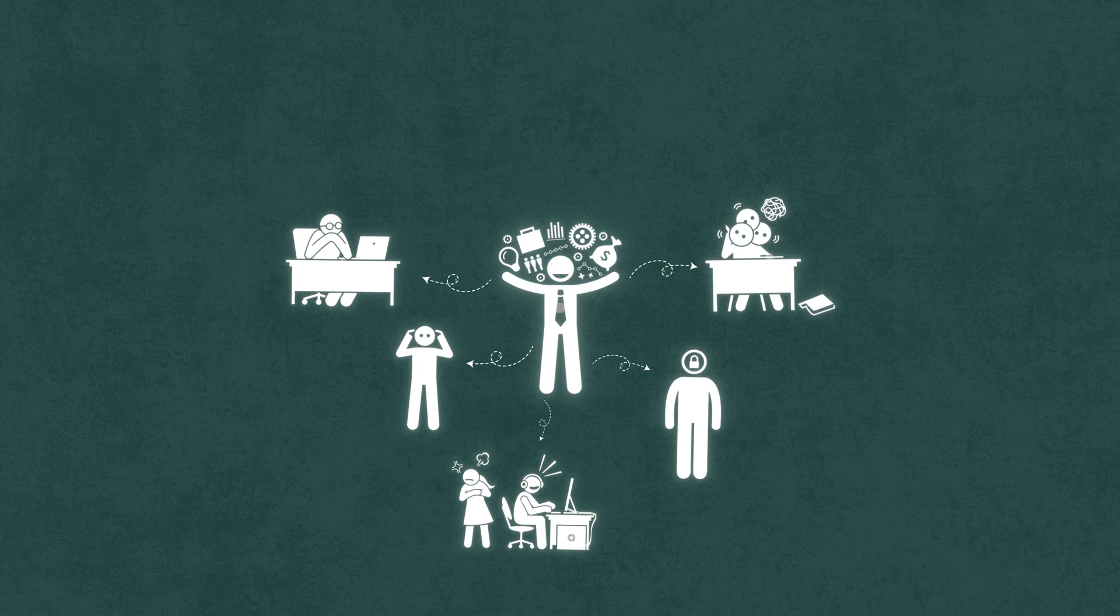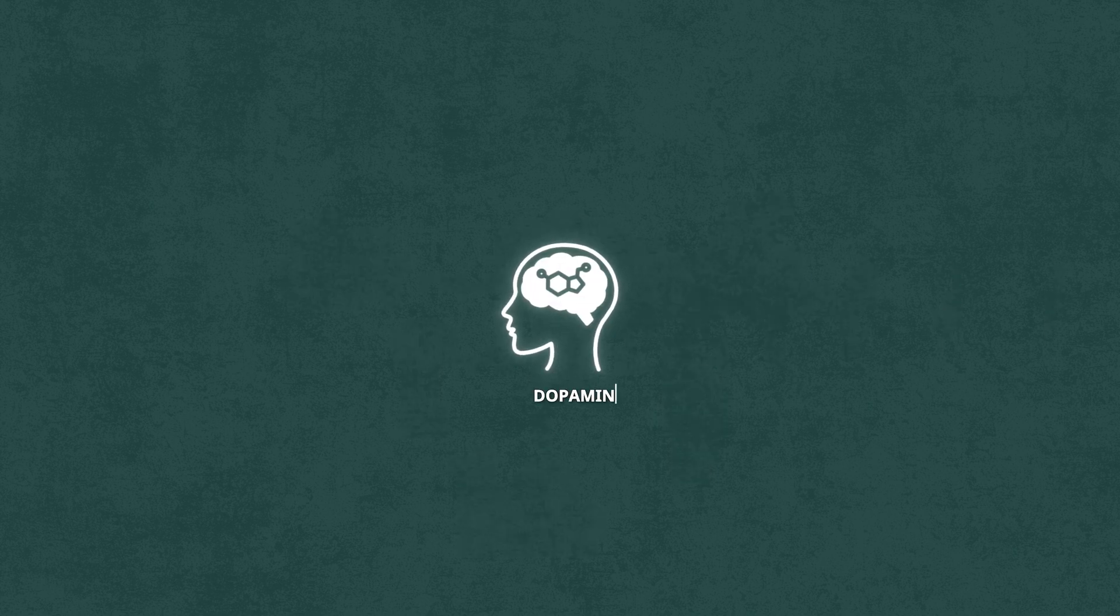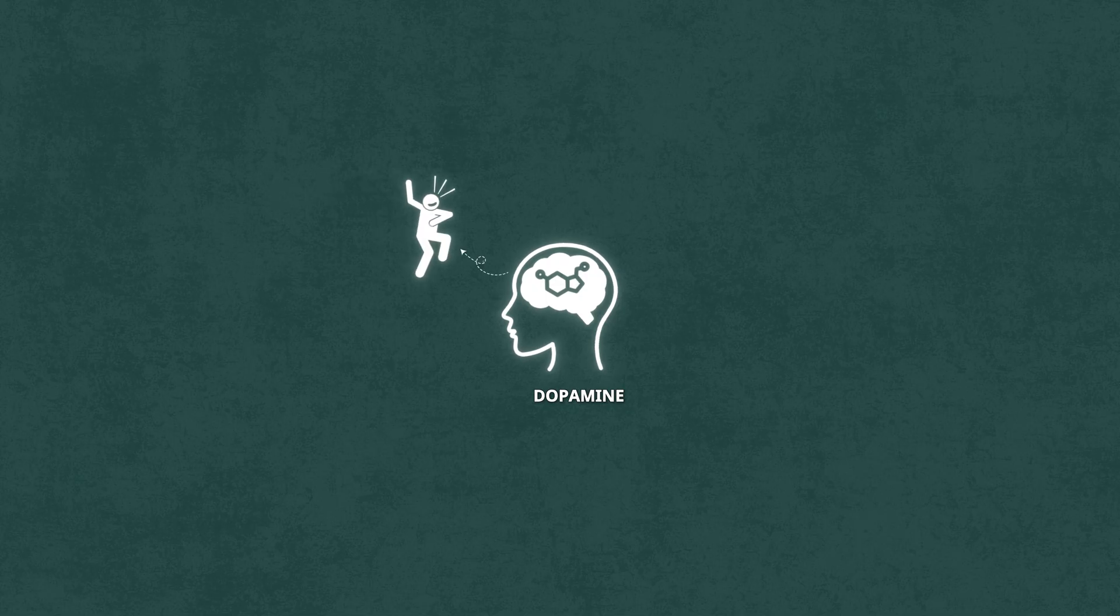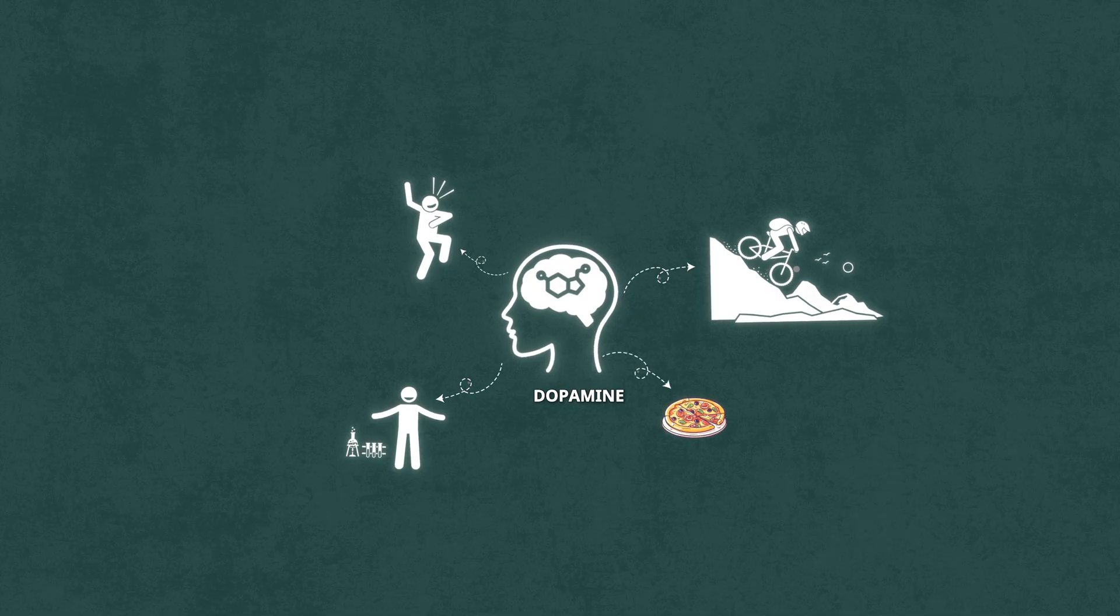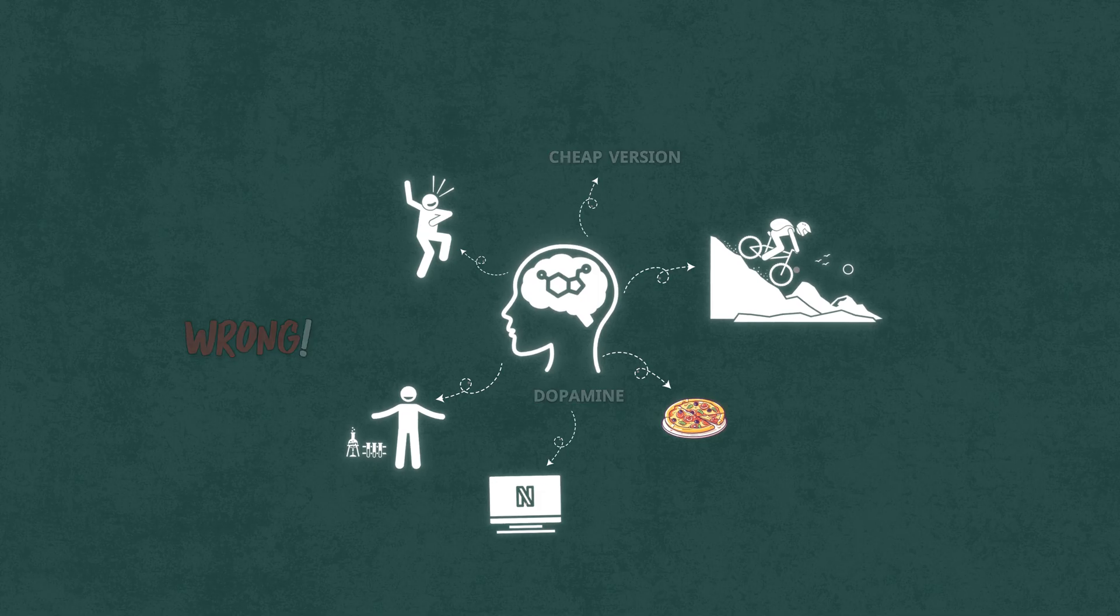Now we move to the second system, dopamine. And let's clear this up right now. Dopamine is not about pleasure. It's about pursuit. See, most people think dopamine is that happy chemical you get when you eat pizza or binge Netflix. Wrong. That's just the cheap version.